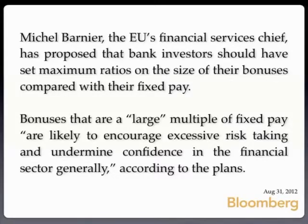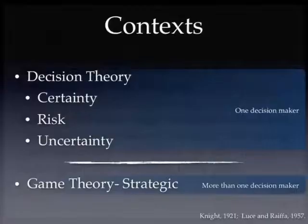Let me start with this quote I came across a couple weeks ago in Bloomberg News. This is from the EU's financial services chief talking about bank investors should have maximum ratios set on the size of their bonuses compared with their fixed pay. This recommendation has the idea that bonuses that are large multiples of fixed pay are likely to encourage excessive risk taking and undermine confidence in the financial sector generally. So I look at this and I see several things. First, I have the same intuition. I see there's at least three things going on: there's risk, there's incentives, and there's strategic interactions.